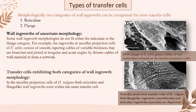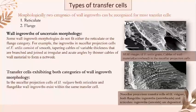Morphologically, two categories of wall ingrowths can be recognized for most transfer cells: first is reticulate and second is flange. We also have wall ingrowths of uncertain morphology and transfer cells exhibiting both categories of wall ingrowth morphology. The examples are shown in the images.